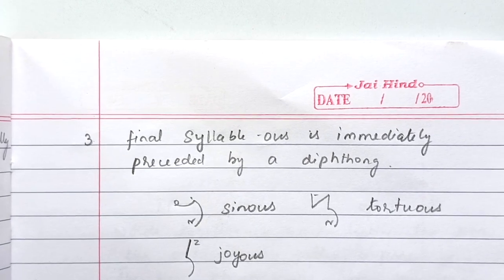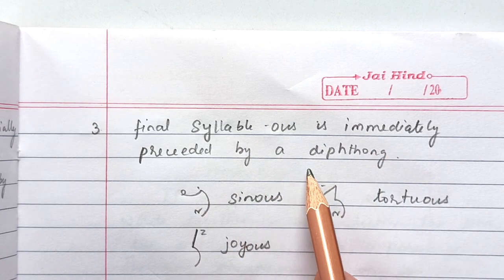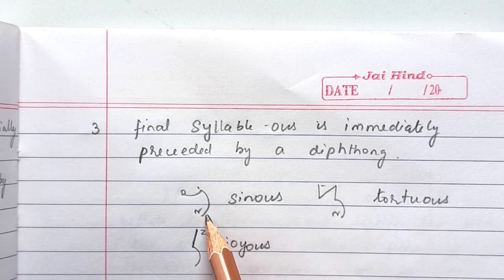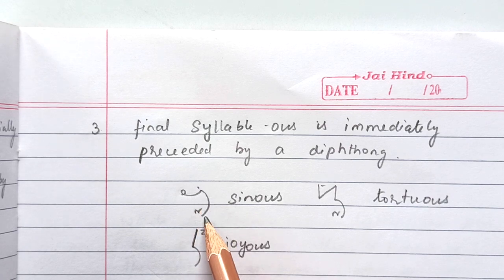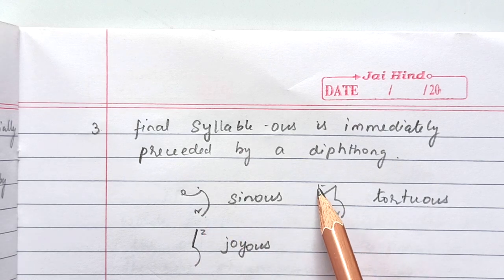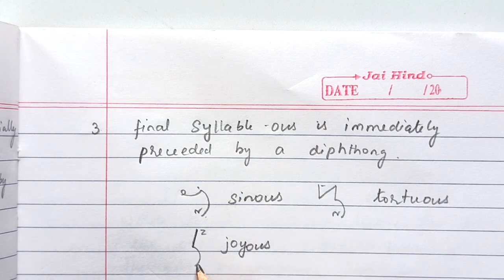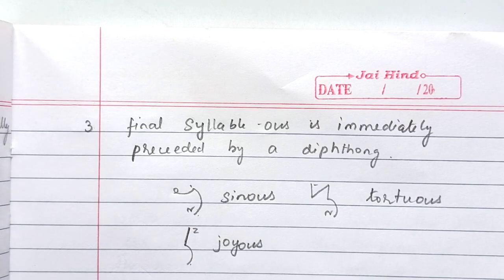Stroke S is also used in the final syllable where S is immediately preceded by a diphthong. For example, in 'sinus,' there is a diphthong before S, so we use stroke S. With a triphone — such as in 'tortures' — before S there is a triphone, so we must use stroke S and cannot use circle S.